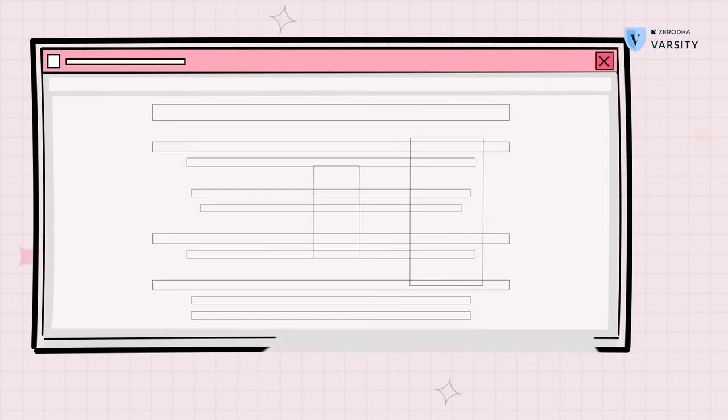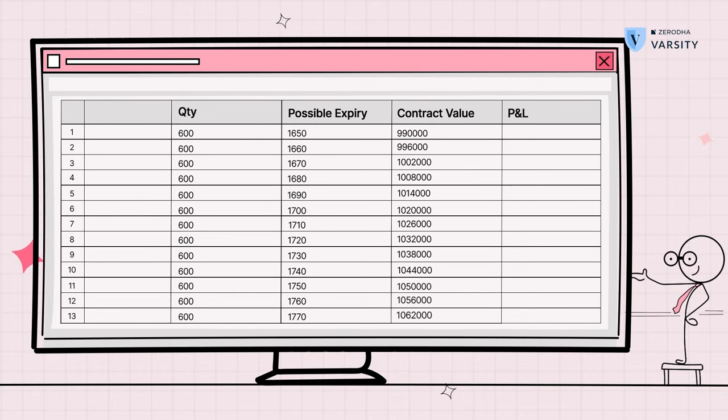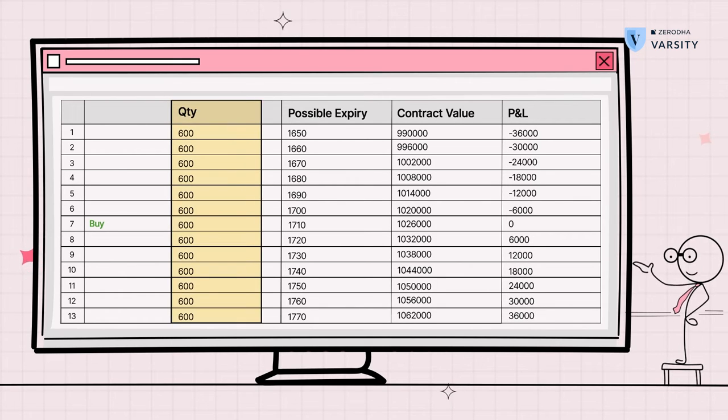Now over here we have a few columns. We can see quantity, we can see possible expiry, the contract value and the profit and loss. Now let's suppose we place a buy order and turn this to green. So as you can see, there are four columns here. The first one is the quantity and we know 600 is the lot size. So let's keep it at 600, that's one lot.